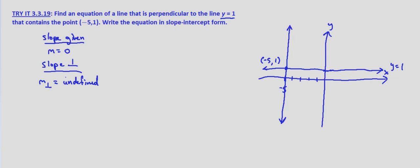And then our point x1, y1 equals negative 5, 1. So using our point slope form, y minus y1 equals m times x minus x1. It's not going to work in this case because our slope, our perpendicular slope, is undefined. It's a vertical line.